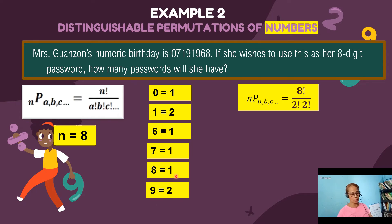Then substituting to the formula, n P taken a, b, and c, our numerator will have eight factorial divided by, if you notice, I already canceled the one factorials. And proceeded with writing only two factorial times two factorial, which came from the digit one and nine, since these are the values that are repeated twice.